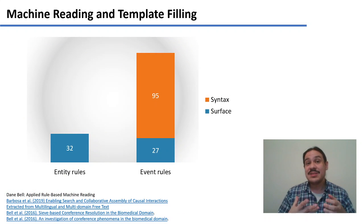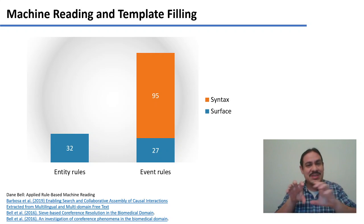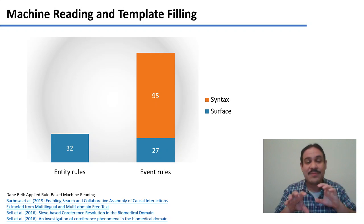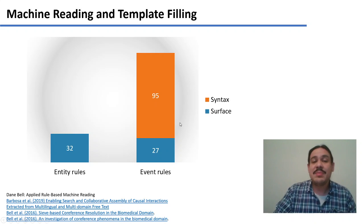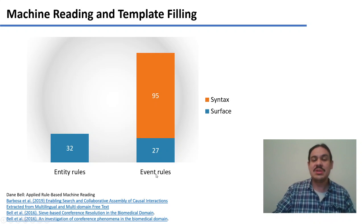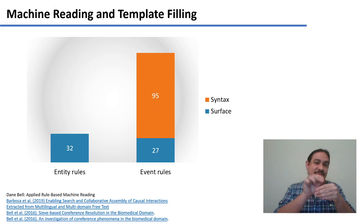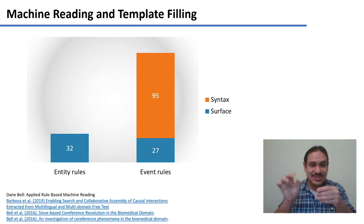And surprisingly, you need very few regular expressions. You need only about 32 to find out what are the correct names of the proteins and where the anaphoric elements are. And you need about 122 rules to extract what are the different events that could be going on, like phosphorylation, like regulation, and so forth.